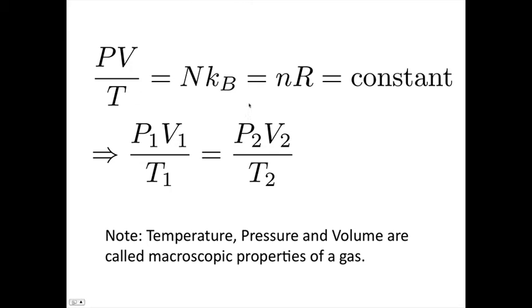If we're considering a sealed container, then the number of moles is not changing. So we can write PV over T is equal to either NkB or equal to nR. And we can say that both these things are constant. So if that's the case, then if we have any initial pressure, volume, and temperature, we can work out the final pressure, volume, and temperature at any time.